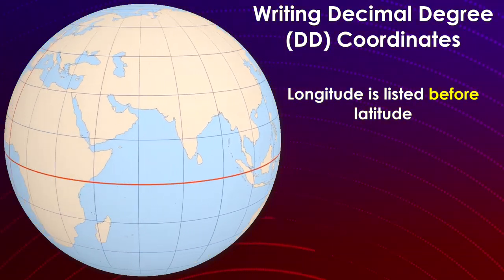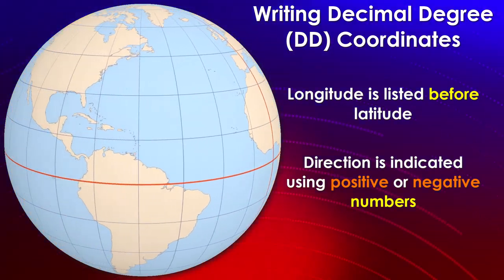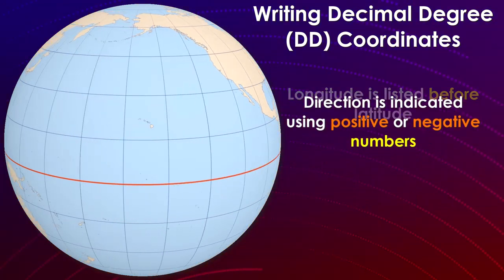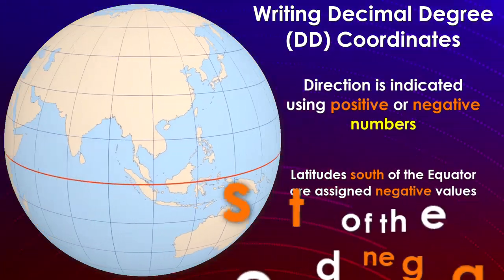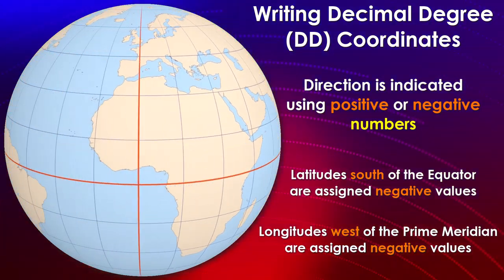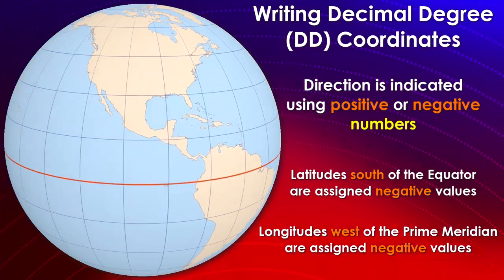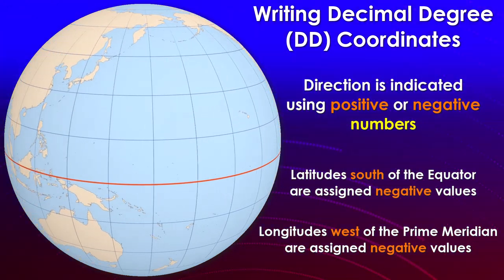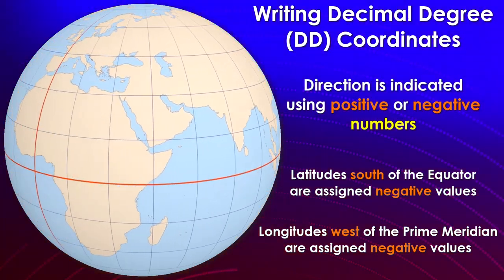We do not use letters to indicate what hemisphere a position is in — we use positive or negative numbers. For latitude, locations south of the equator are assigned negative values. For longitude, locations west of the prime meridian are assigned negative values, and only the degree symbol is used. One thing that's handy to know about decimal degrees is that if you are dealing with coordinate positions in the western hemisphere, like the United States, Mexico, Canada, and South America, the longitude values are going to be negative.